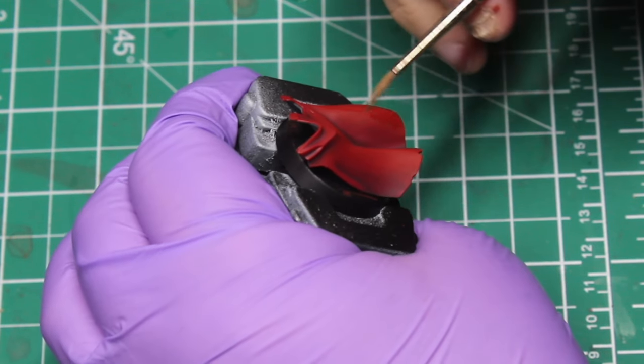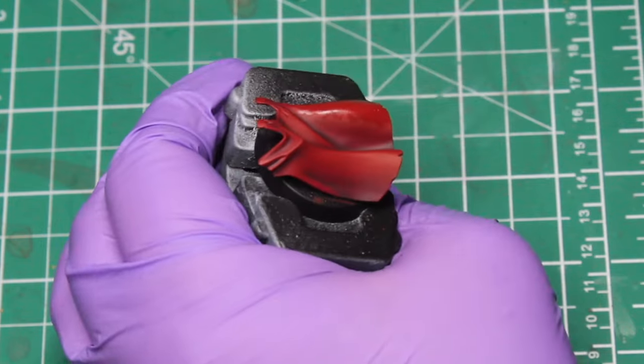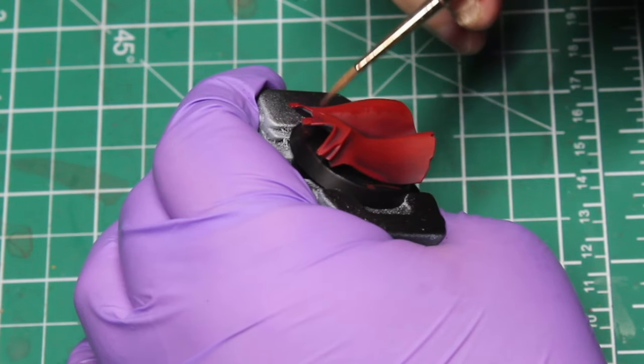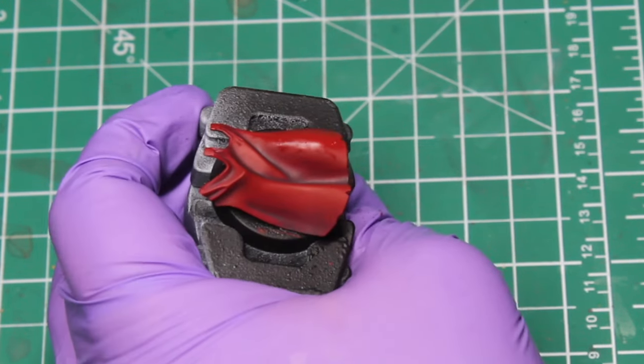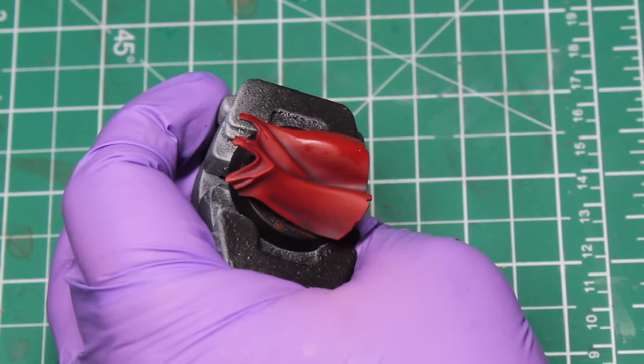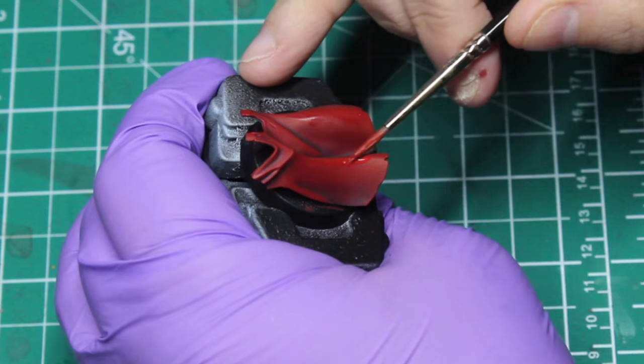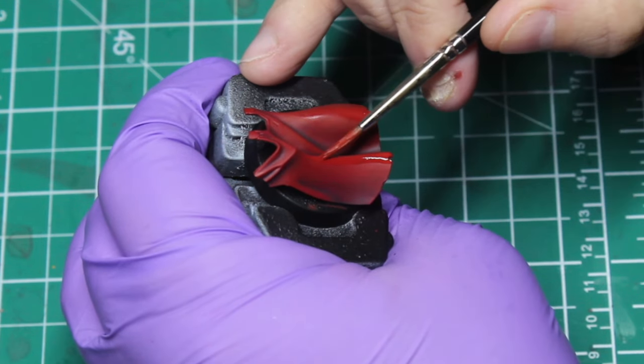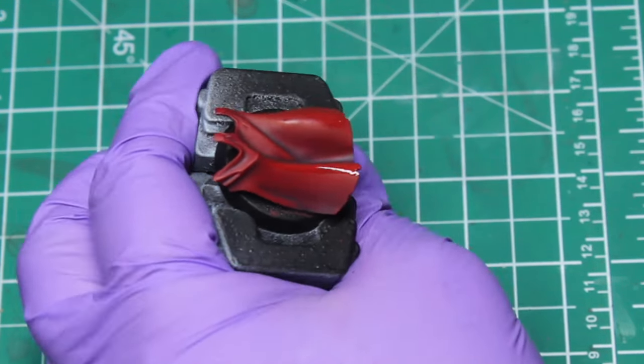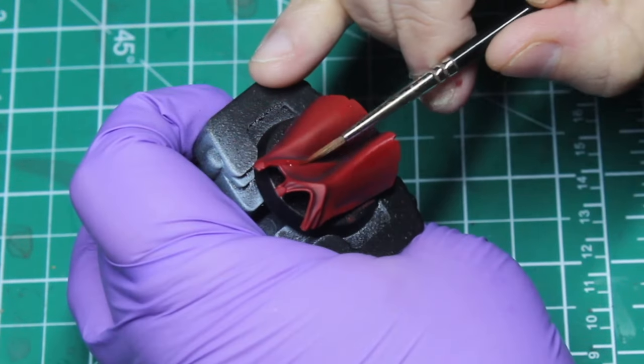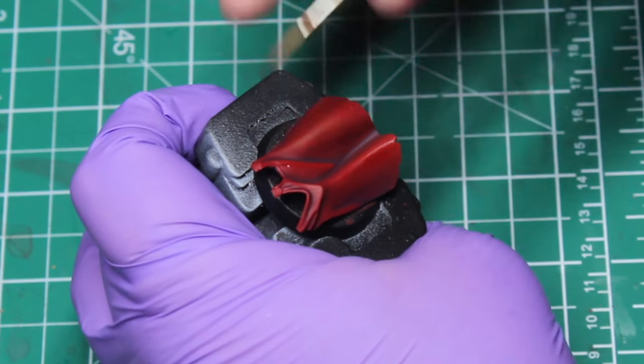There's no real crazy secret to this. It's just a matter of learning how to glaze and feather properly and getting a good consistency on your paint. You want it to be thin. I'm just adding water into this to thin it. There's no medium or anything like that. You can use medium if you really want to. I don't have any at the moment, so I'm just using good old-fashioned water.